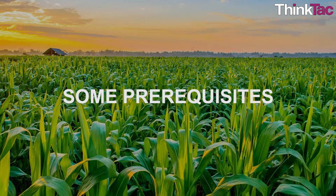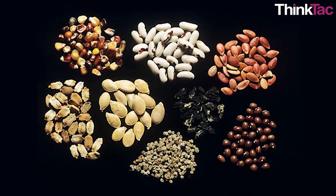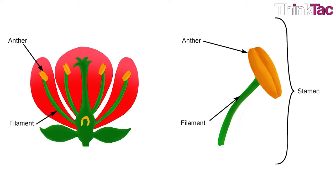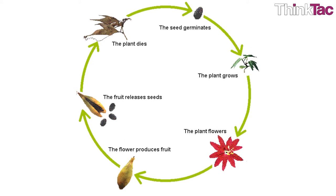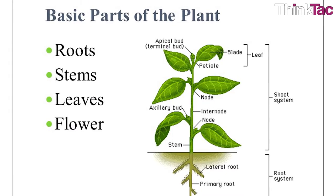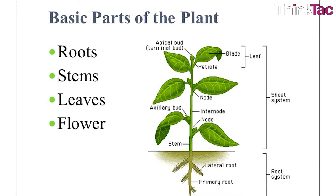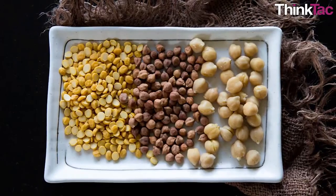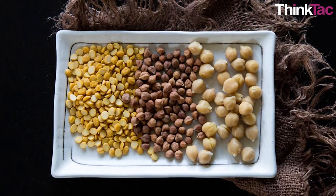Some prerequisites: a basic idea about terms like plants, seeds, pistil, stamen, etc. An idea about various stages in the life cycle of a plant, for example seed generation, germination, growth, flower production, and fruit formation. Some basic knowledge about the different parts of a plant. And simple motor skills like handling the seeds, tying threads or rubber bands, etc.